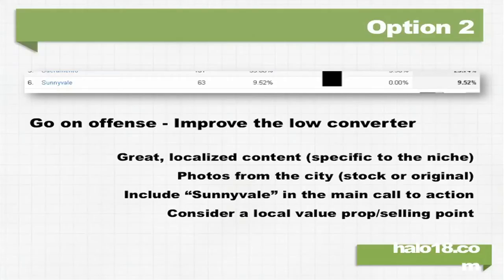Option two, the one I preferred, was to go on the offensive and attack that low converter. If Sunnyvale hates me and only converts at 9.5%, I'm going to go out of my way to make a page specific to Sunnyvale, California and try to get traffic from there and convert it at way better than 9.5%. Same tactical approach — great local content, photos from the area, city name in the call to action. And since I'm already in a bad place with Sunnyvale, I'm going to consider a local selling proposition, maybe a discount for people in Sunnyvale, or a special bundle to entice people from that area to fill out a lead form.